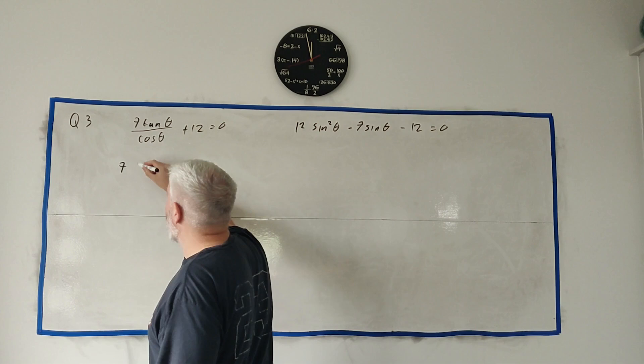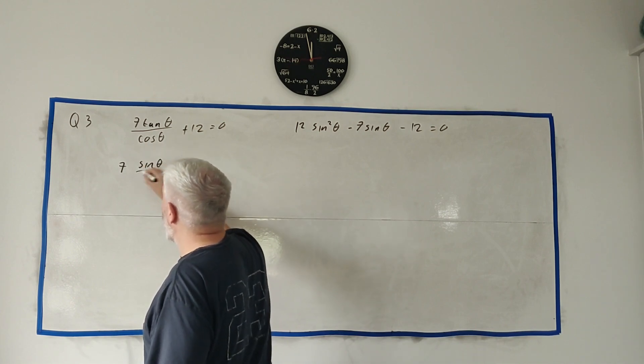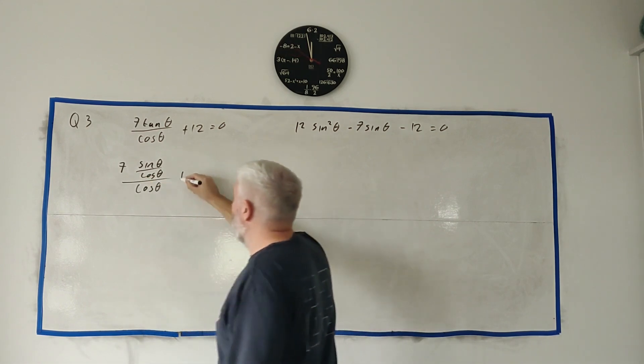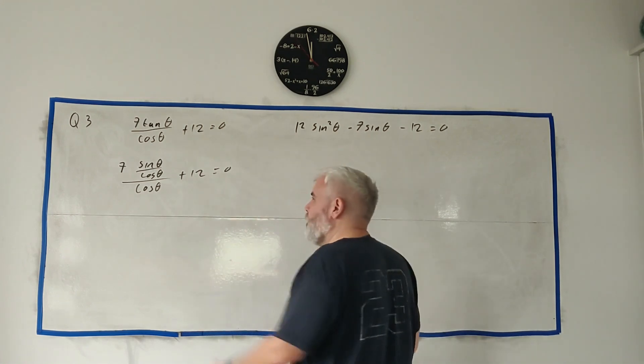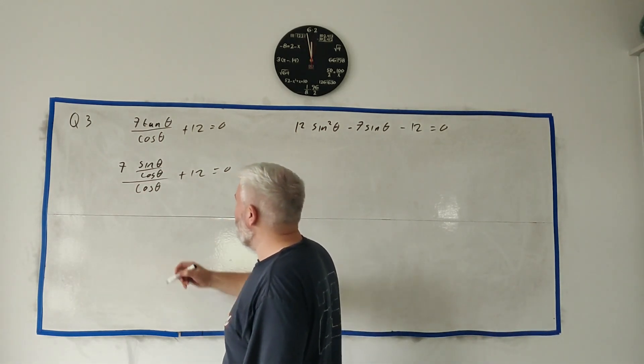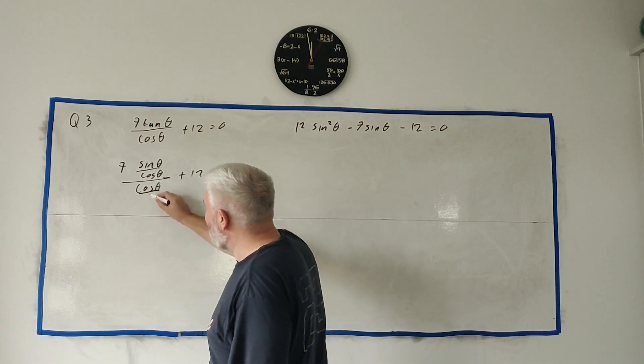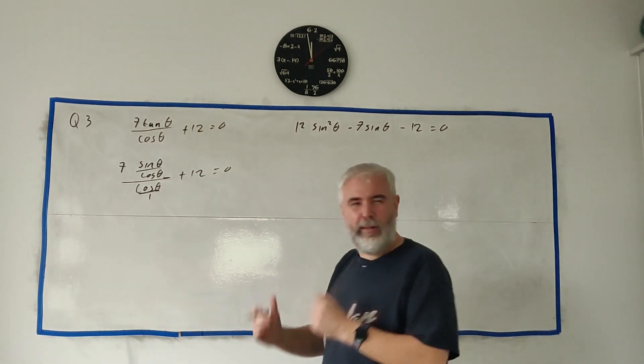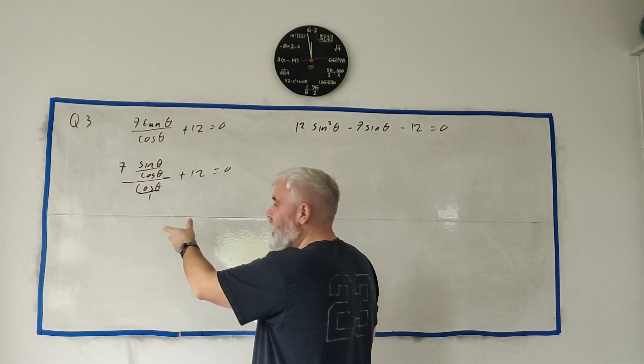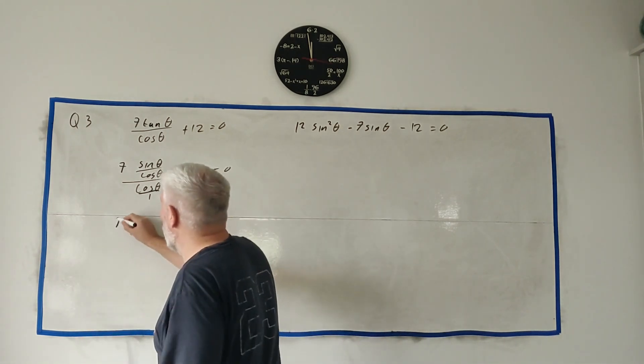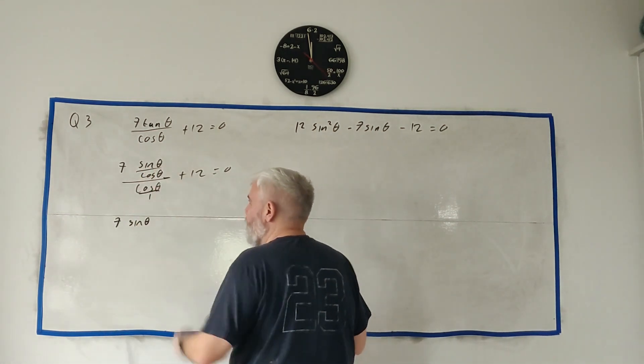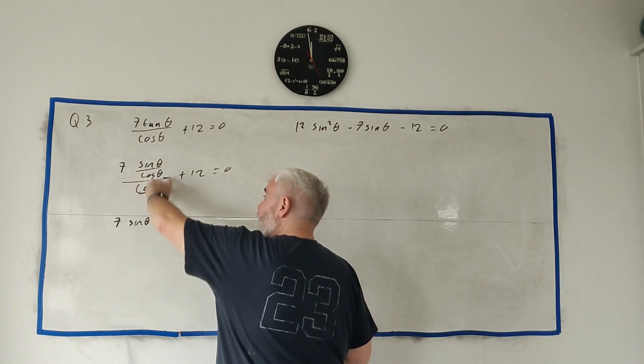A tangent is just as we see in a moment sine divided by cosine. So if we take this one and start playing around with it. Instead of tan I'll use sine theta over cosine theta. That's all divided by cosine theta plus 12 equals 0. Be careful when you're doing fractions and dividing fractions.